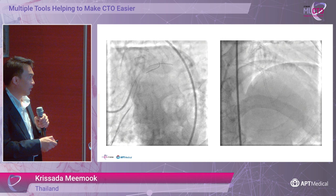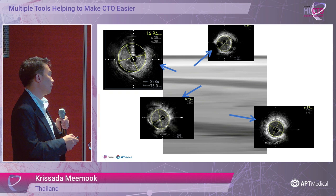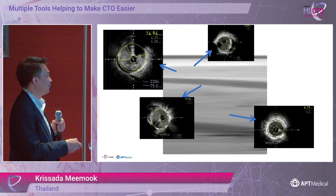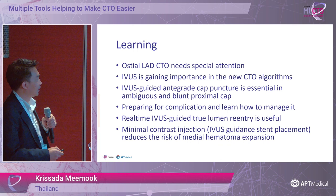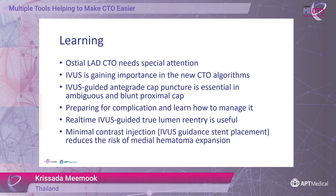This is the final result after placing four stents with DK crush on diagonal 2. This is the final IVUS image. On the left main, the area is about 15 mm². This is the proximal LAD, circumflex, and mid-LAD stent — the area is really acceptable. This is the learning point from this case: everyone knows the ostial LAD needs special attention because it is like left main disease.